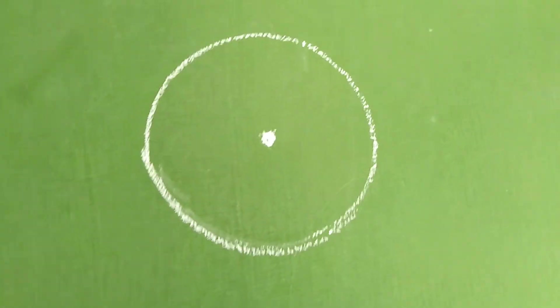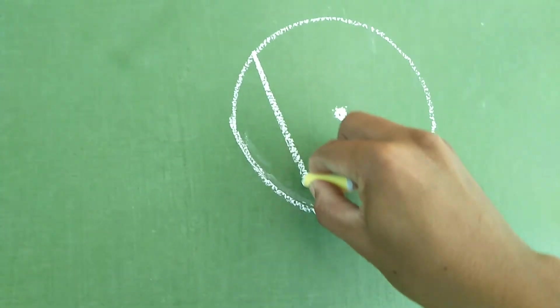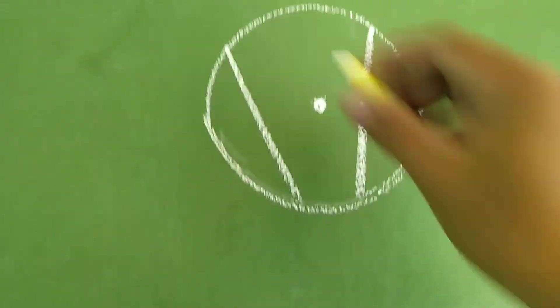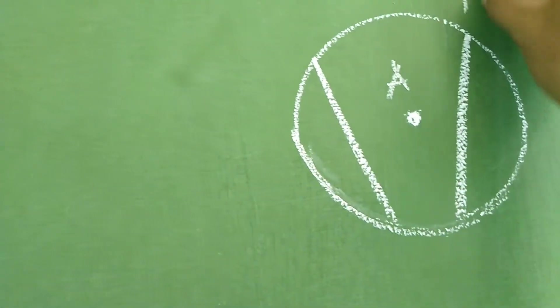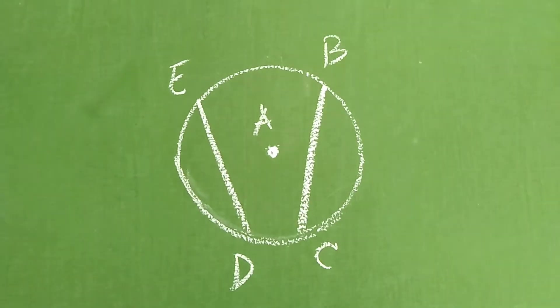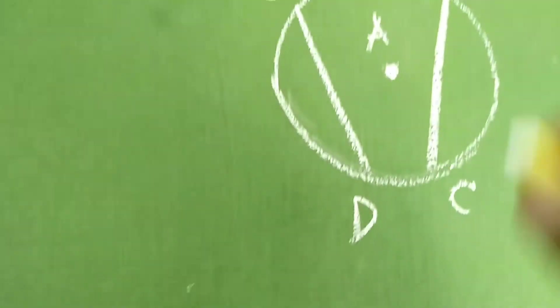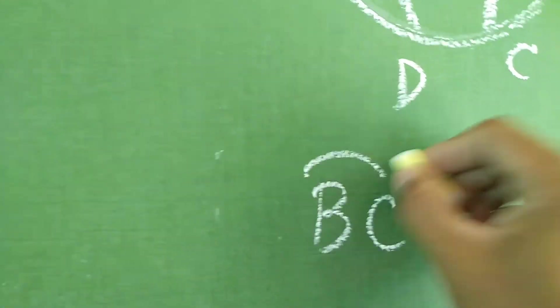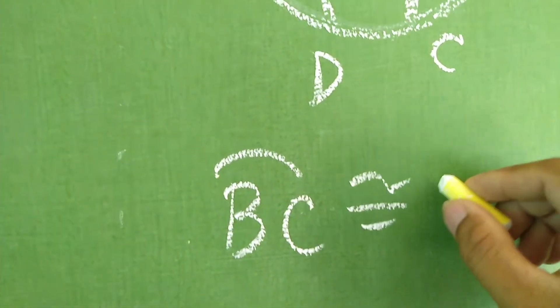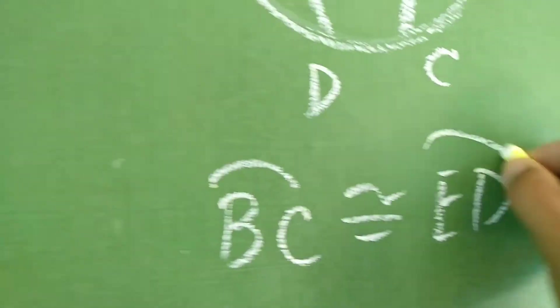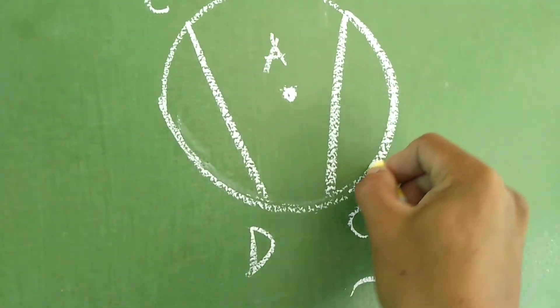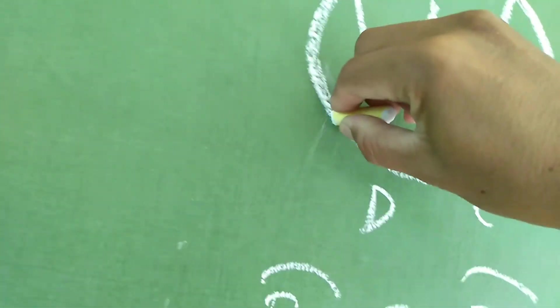Okay? Isa sa mga postulate din po. Meron daw tayong dalawang chords magkahiwalay. Okay? So, pasensya na. So, sabi natin this is circle A. B, C, D, and E. Ang mga variables nya. Okay? Circle A. Kapag daw sabi natin sinabi ng book that BC arc BC is congruent to arc ED. Okay? So, nakikita nyo ba ito para para class muna. Arc BC is congruent daw siya sa arc ED.